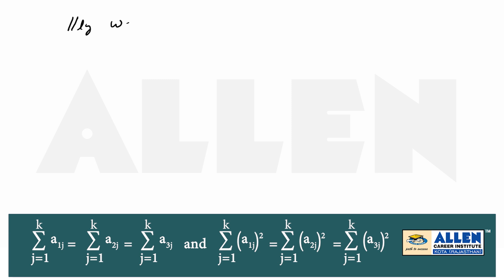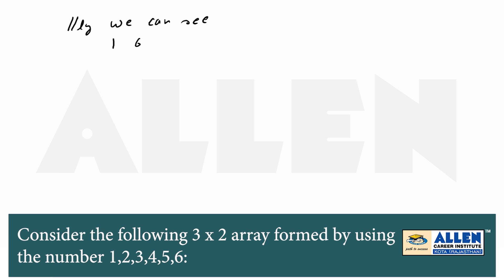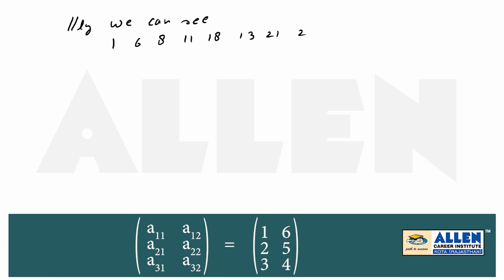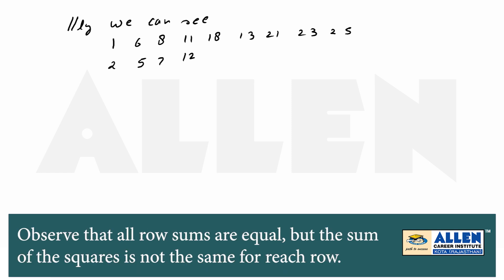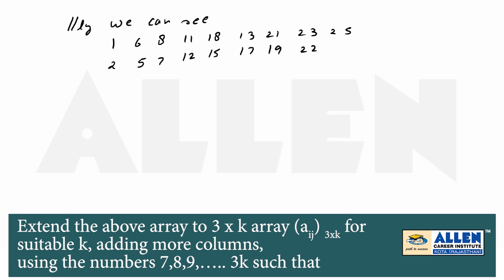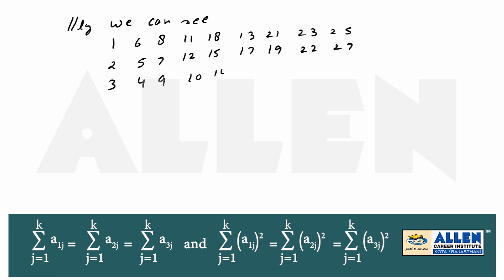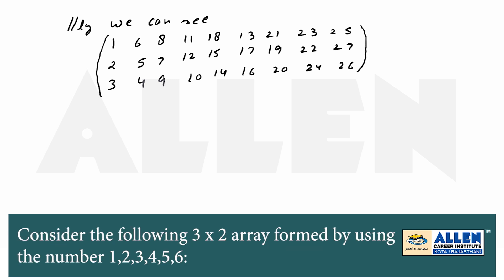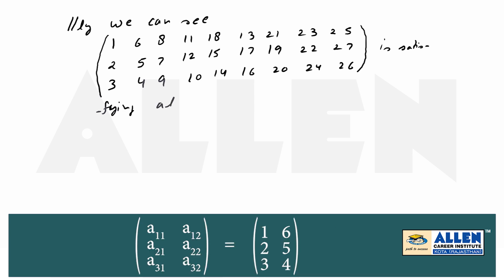Similarly we can see that the array with rows {1, 6, 8, 11, 18, 13, 21, 23, 25}, {2, 5, 7, 12, 15, 17, 19, 22, 27}, {3, 4, 9, 10, 14, 16, 20, 24, 26} also satisfies all conditions, giving the k=9 case.